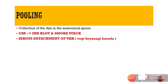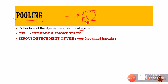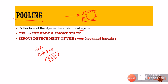The next cause of hyperfluorescence is pooling of the dye. Pooling is hyperfluorescence that progressively enlarges to fill a fluid cavity, and once that anatomical space is filled, it becomes fixed in size — unlike leakage, which keeps increasing. The dye typically fills the sub-retinal space or the sub-RPE space, as in a pigment epithelial detachment.